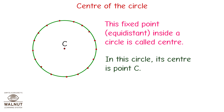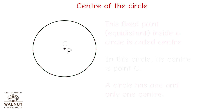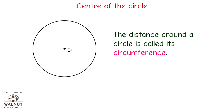In this circle, its center is point C. A circle has one and only one center. The distance around a circle is called its circumference.